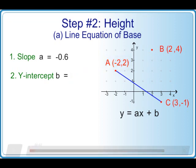No. Let's go through the steps together. We can write the line equation as y equals ax plus b. We replace a by minus 0.6. We also replace x and y with the coordinates of point a. X is equal to minus 2, while y is equal to 2.